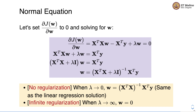When we use lambda equal to infinity, we get w equal to 0, which is infinite regularization — again a very high bias solution.